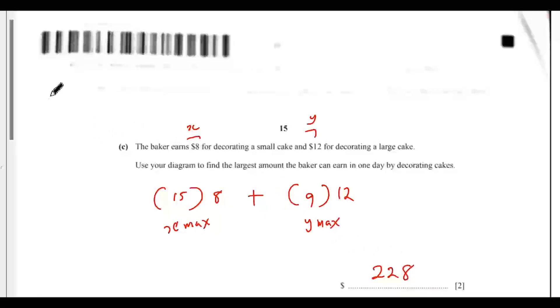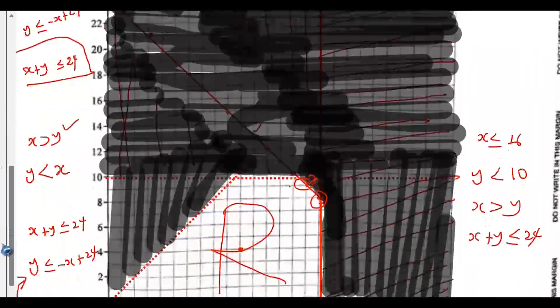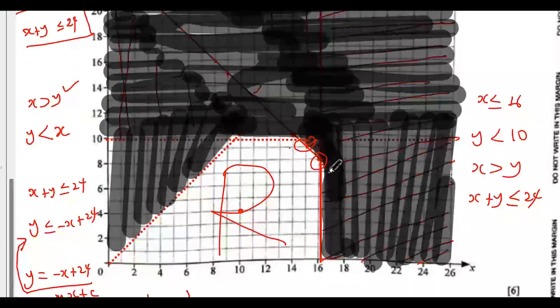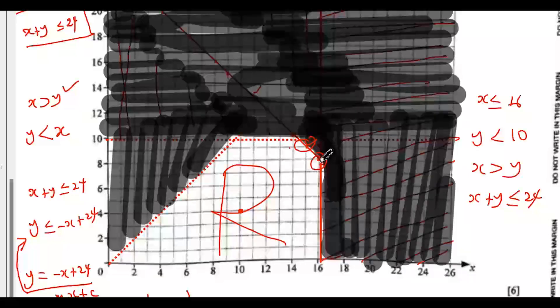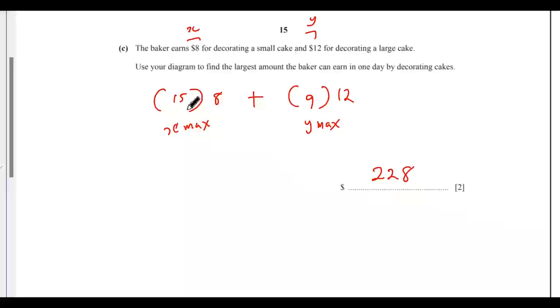But I would like to show you something. We have another point we could take. If you take the maximum value of x to be 16, that means the maximum value of y would be 8. Let me show you what you will get if you take this point. Instead of 15, we're going to have 16 multiplied by 8, then plus 8 multiplied by 12.